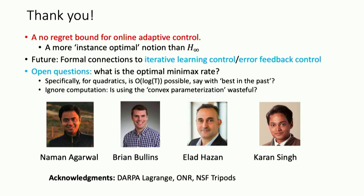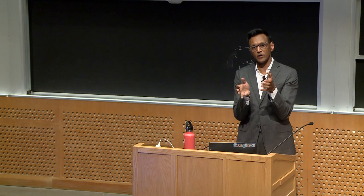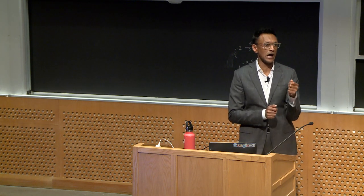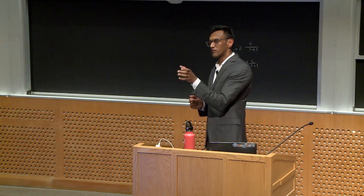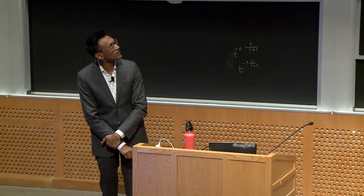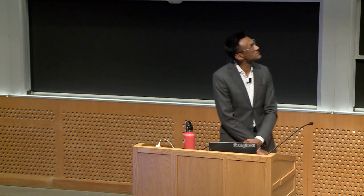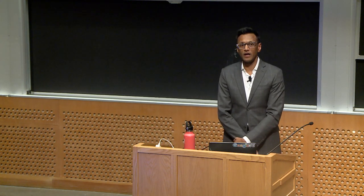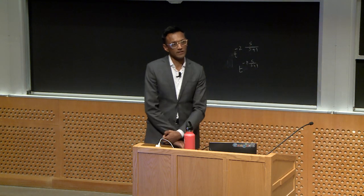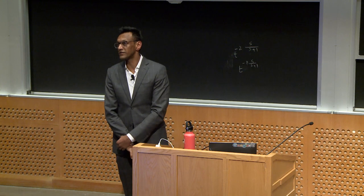Overall, the spirit of this work is trying to consider different min-max notions to possibly get something more akin to instance-optimal ways to do robust control. There are many open questions, such as — we've given an upper bound on the min-max value of the game, but even for the special case of quadratic loss functions, we haven't sharply pinned this down. This is work with Elad Hazan, Karan Singh, Brian, and Naaman. Karan, Brian, and Naaman did a lot of the heavy lifting and are just great collaborators. Thank you very much.